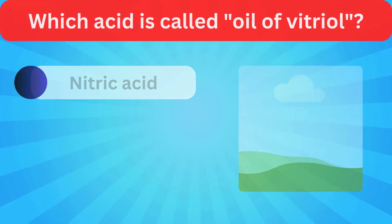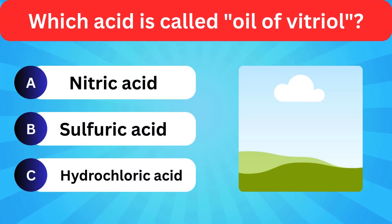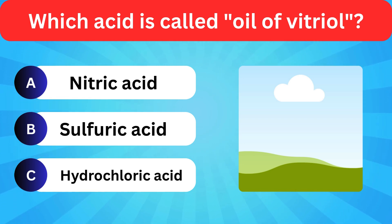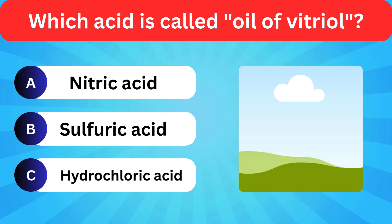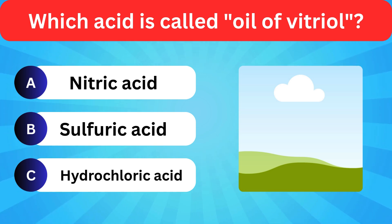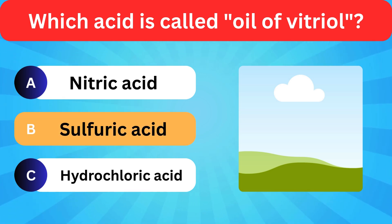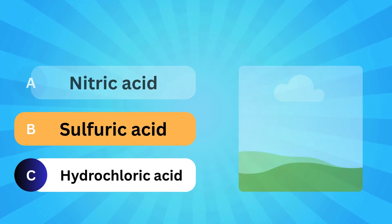Which acid is called oil of vitriol? Options: Nitric acid, Sulfuric acid, Hydrochloric acid. Correct answer is sulfuric acid.